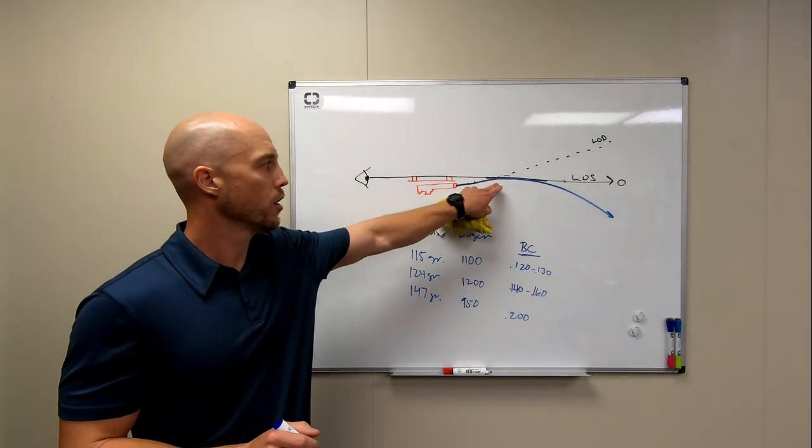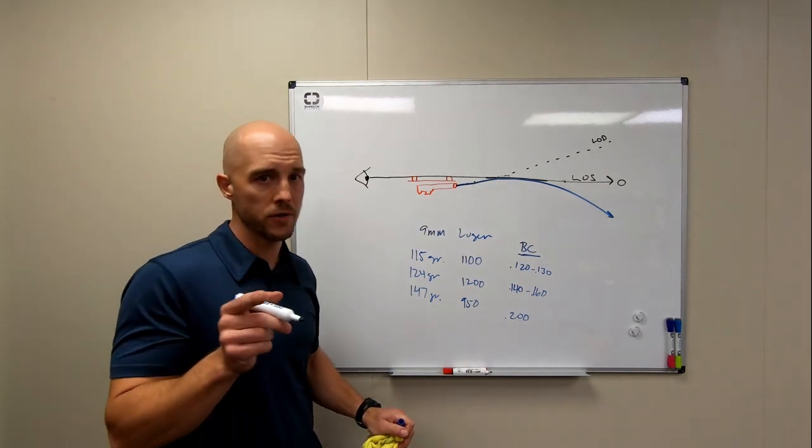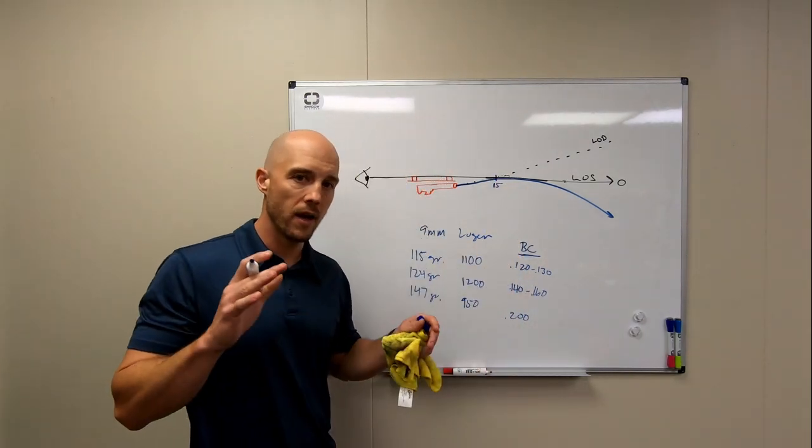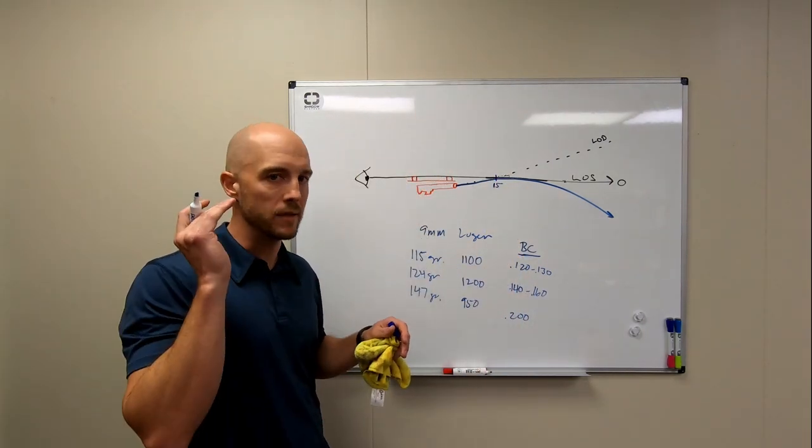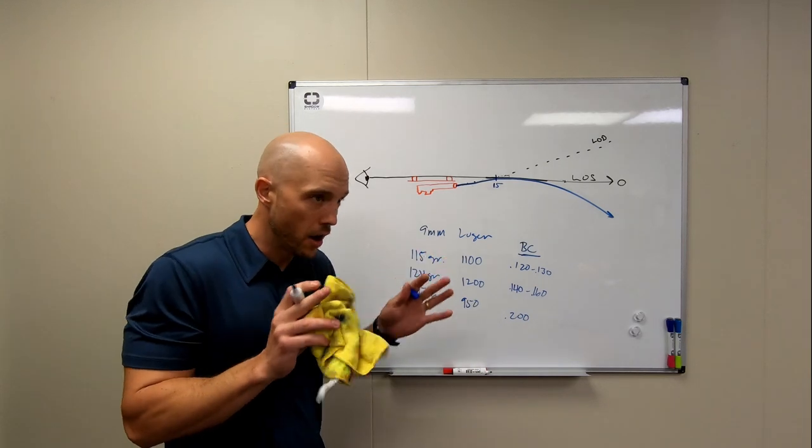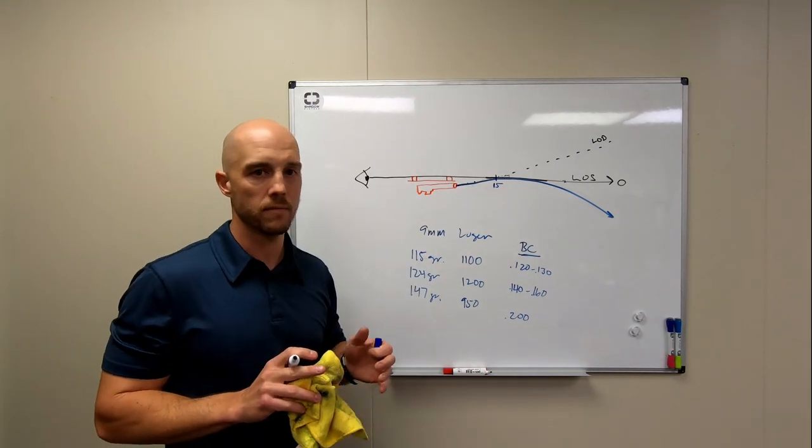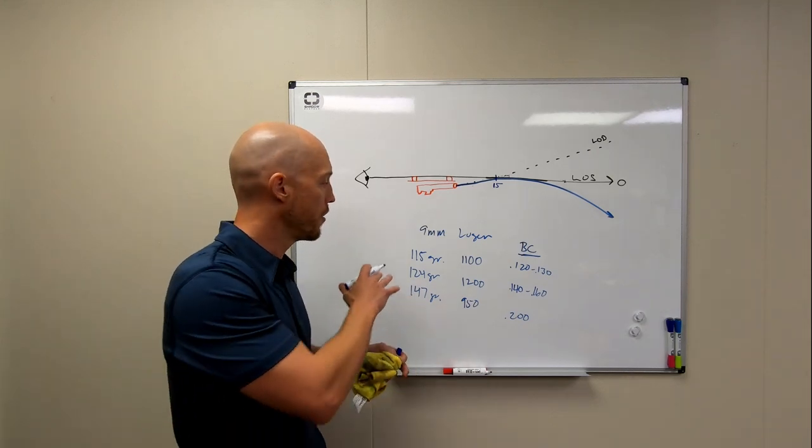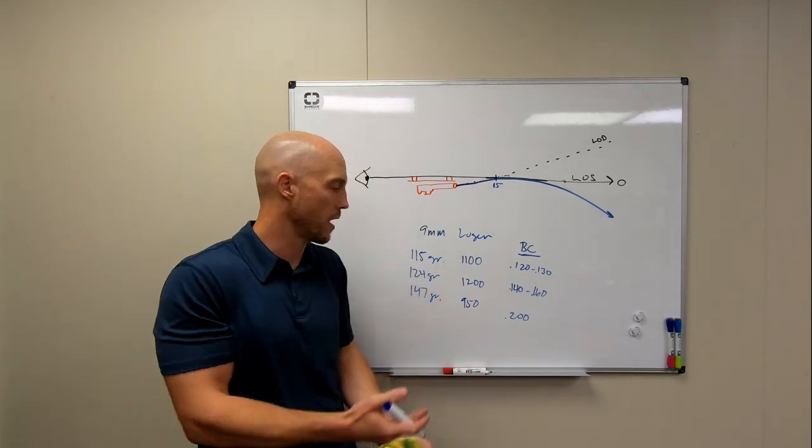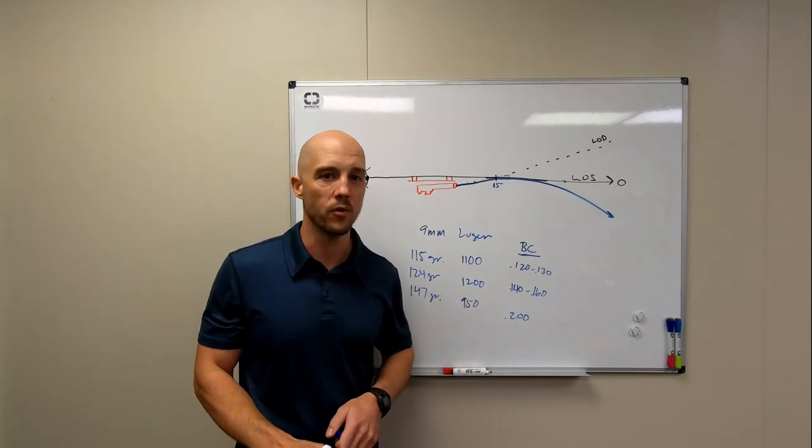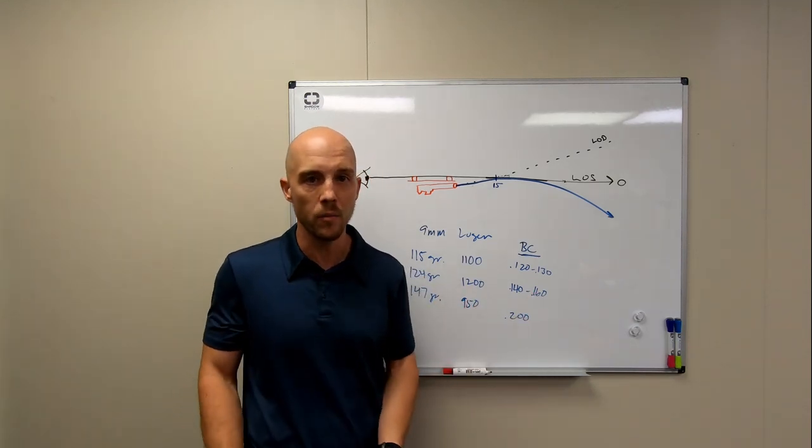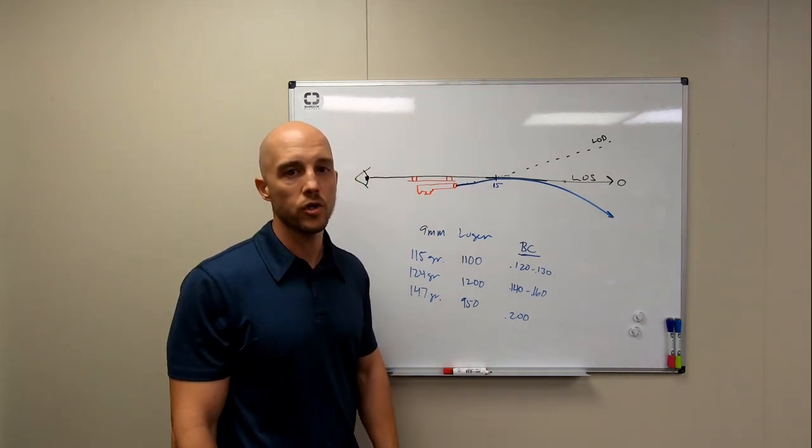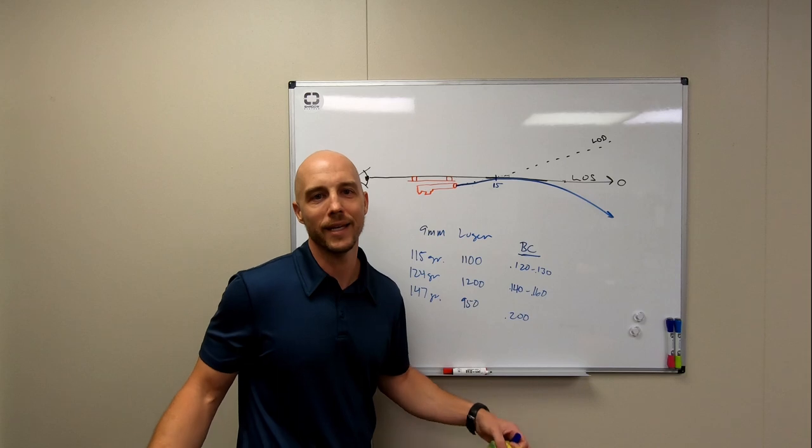So in the case here of our nine millimeter bullet, Shadow Systems, we do zero our pistols at 15 yards. So we have designed our sighting solution to be dead on or as close to dead on as possible at 15 yards. And we usually, by the way, for our testing, we usually use 124 grain bullet, just because it's kind of in the middle and I happen to like the recoil impulse of a 124. So if you have to go shoot 10,000 of them, you might as well kind of enjoy it. So 124 is what we usually shoot, but it doesn't really matter.